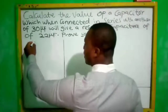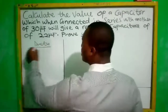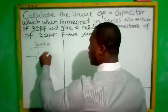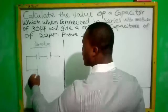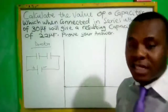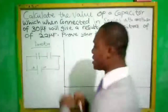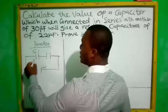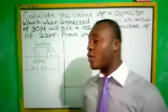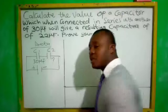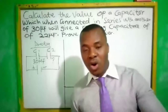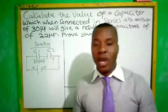This is the diagram. Let's put our data here. The question says there are two capacitors connected in series. This is the series diagram. We have capacitor C1, which has 30 microfarad, and C2 is the value of the capacitor that we don't know.